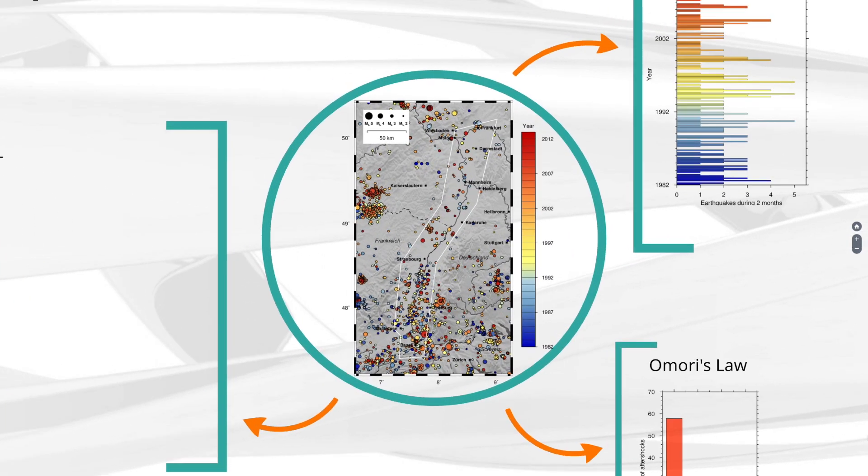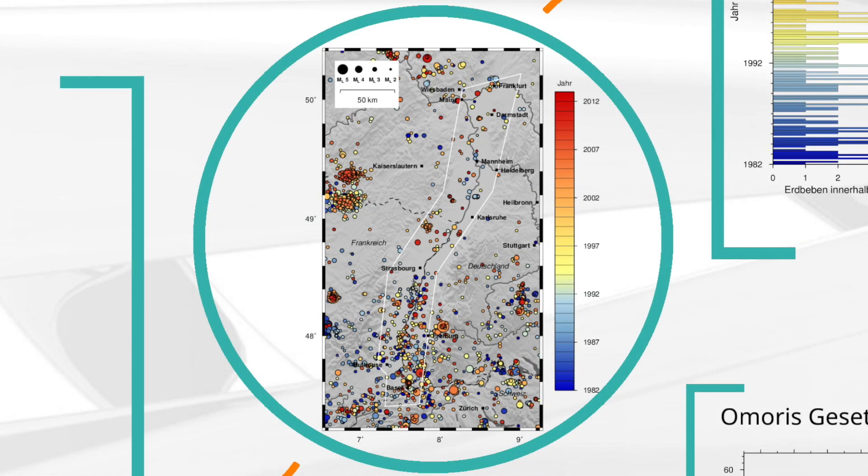Shown on this map of the Upper Rheingraben and the surrounding regions are earthquakes that have happened in these areas since 1982. Large circles indicate strong quakes and small circles weak ones. The Upper Rheingraben is marked in white. What do you notice?